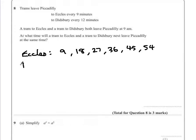Now the tram for Didsbury goes every 12 minutes. So that will leave after 12 minutes. The next one will be 12 minutes after that which is 24. After that we'll go to 36.